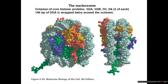So what is a nucleosome? We have histone proteins in the middle and DNA around the outside. There are four different types of core histones: H2A, H2B, H3, and H4. Within the central part of the nucleosome there are two of each of these core histone proteins, making a total of eight proteins, which is known as an octamer.